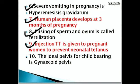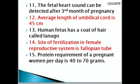The ideal pelvis for childbearing is the gynecoid pelvis. The fetal heart sound can be detected after the third month of pregnancy. Average length of umbilical cord is 45 cm.